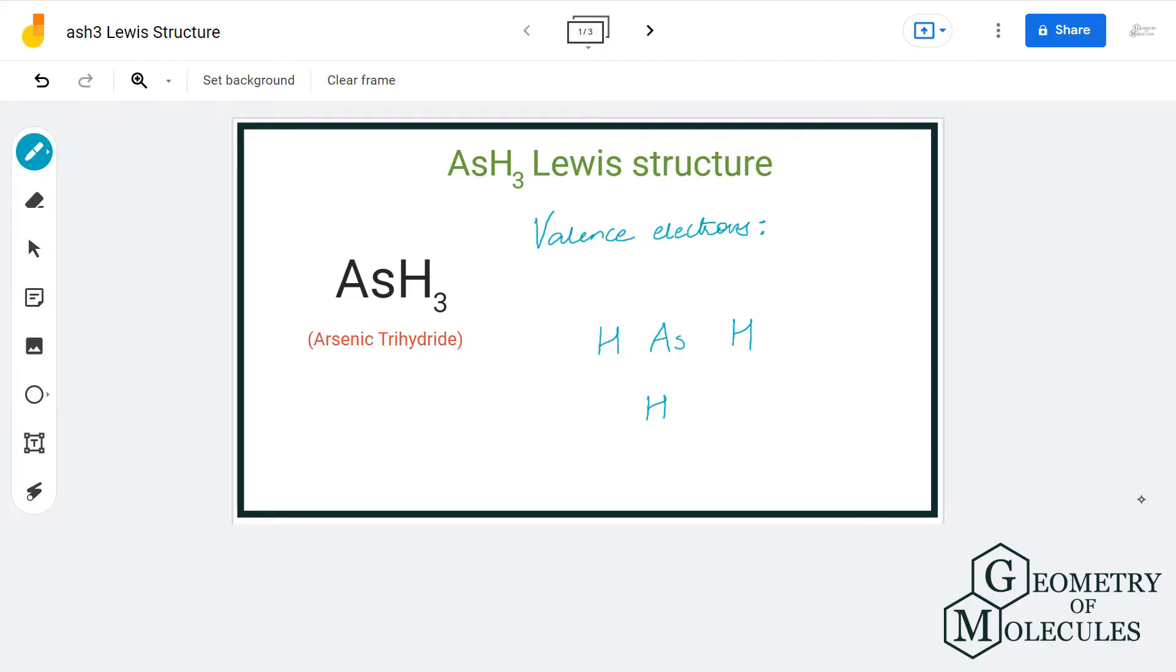Hi guys, welcome back to our channel. In today's video, we are going to help you with AsH3 Lewis structure. It is a chemical formula for arsenic trihydride, and to find out its Lewis structure, we will first determine the total number of valence electrons.